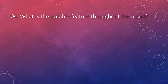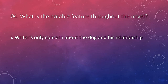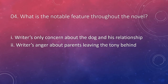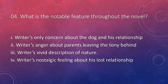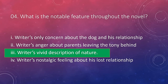Question number four: what is the notable feature throughout the novel? Options include the writer's only concern about the dog and his relationship, writer's anger about parents leaving Tony behind, writer's vivid description of nature, and writer's nostalgic feeling about his lost relationship. If you have read the novel, it is quickly notable that the writer has a vivid description of the background. So the answer is writer's vivid description of nature. The narrator focuses on every detail, creating visuals in the mind of the reader, just like a movie.